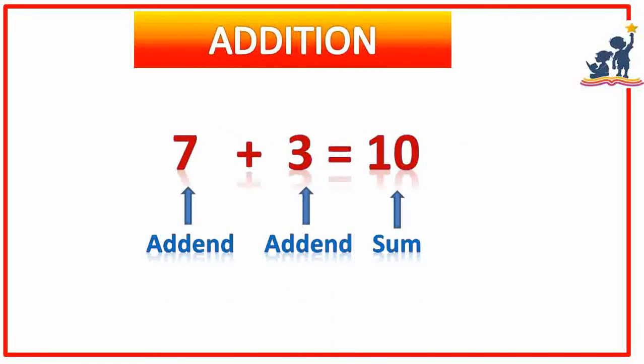7 plus 3 is equal to 10. Here, 7 is called addend, 3 is also called addend, and 10 is called sum.